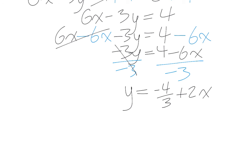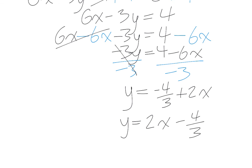However, we are not finished. Let's rearrange some of the terms on the right side of our equation — we want the term with 2x first. Therefore, the equation of our line in slope-intercept form is y equals 2x minus 4 over 3.